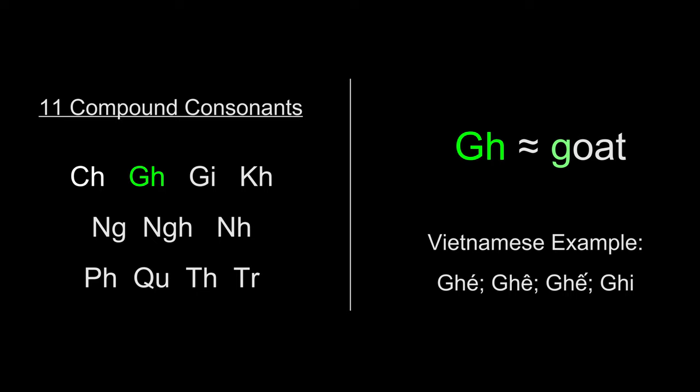This one makes a G sound. Like a G in English, goat. Some Vietnamese examples are Gah, guh, guh, guh.